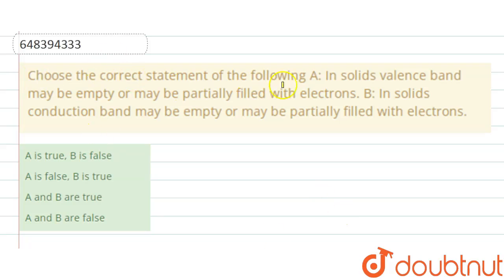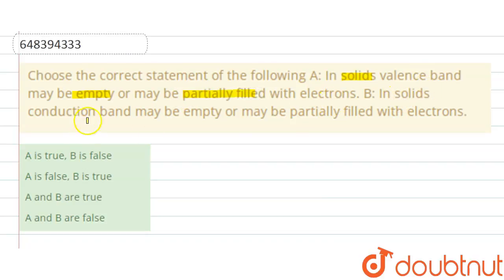Choose the correct statement of the following. Statement A: In solids, the valence band may be empty or may be partially filled with electrons. Statement B: In solids, the conduction band may be empty or may be partially filled with electrons.